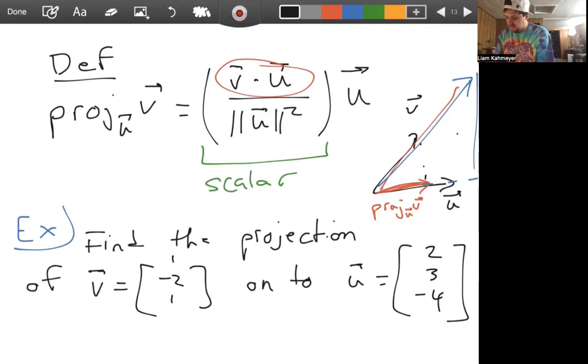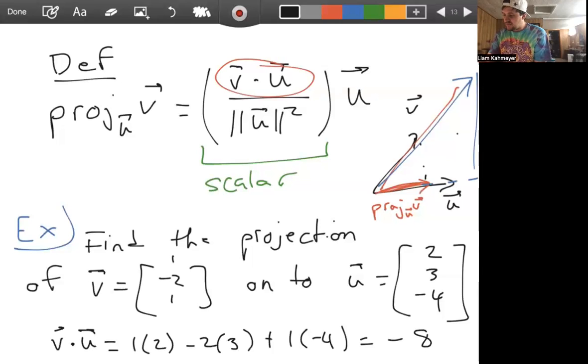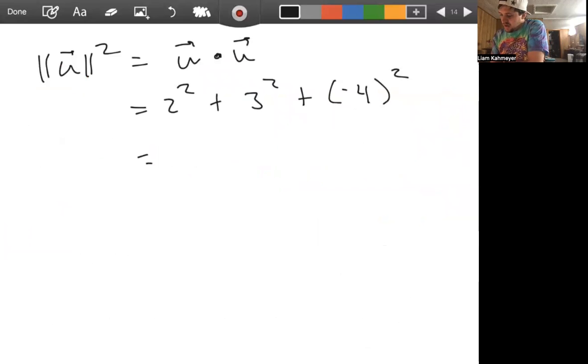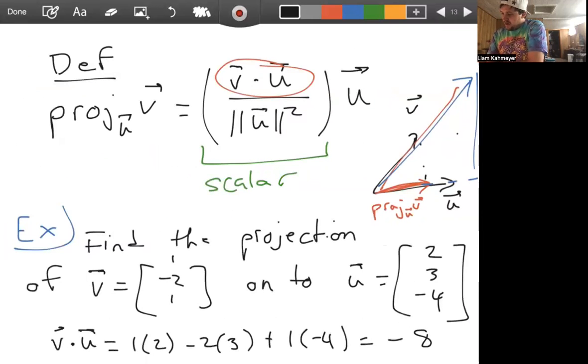Let's find the dot product, so V dot U is just going to be 1 times 2 minus 2 times 3 plus 1 times negative 4. That's going to be 2 minus 6 is negative 4 minus 4, that should be negative 8 if I'm not mistaken. And then we also need the magnitude of U squared, but what is the magnitude of U squared? We had a property in the last video that said this is just the dot product of U with itself. And so if U is [2, 3, -4], this is 2 squared plus 3 squared plus negative 4 squared, which is 4 plus 9, so we have 13 plus 16, which should be 29.